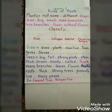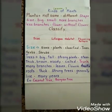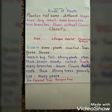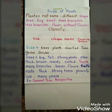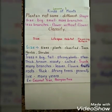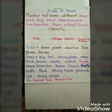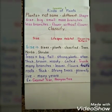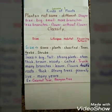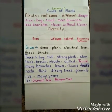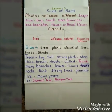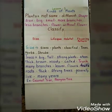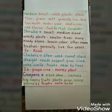To repeat: trees are big, tall, and strong. The stem is thick, brown, and woody — called the trunk. They have many branches with leaves, flowers, and fruits. The roots are thick and strong, and trees generally live for many years. Examples of trees are the coconut tree and the banyan tree.